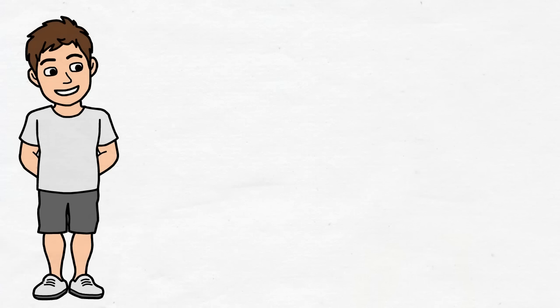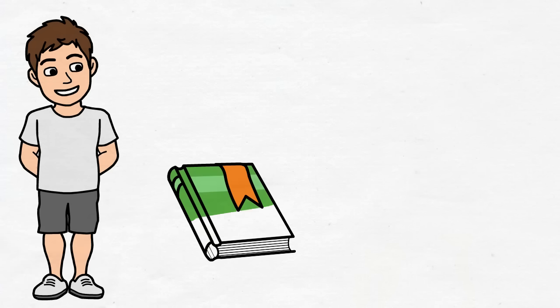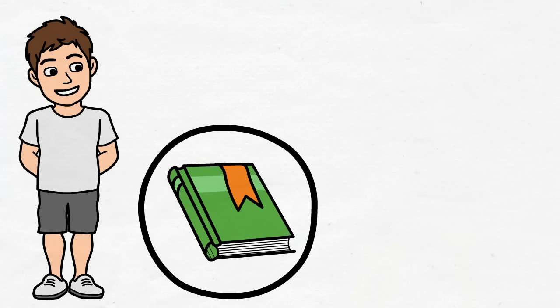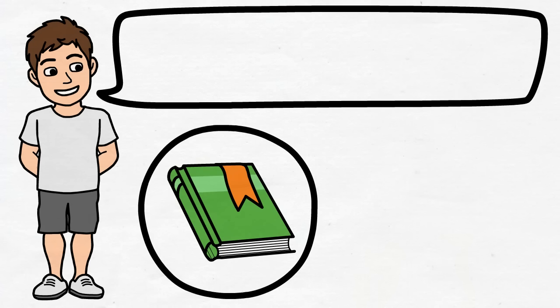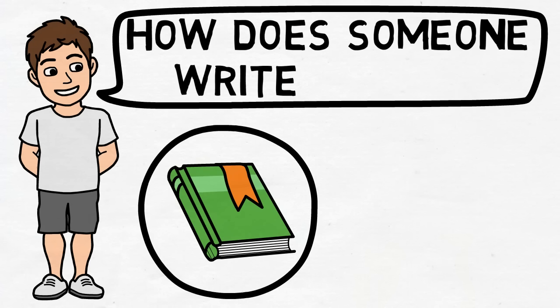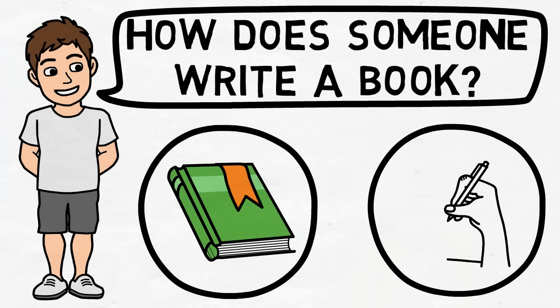This is Mike. He wants to write his own book. OK, so that's the direction he wants to go in. Now he needs to find out how to get there. So he asks himself this question. How does someone write a book? He comes up with this simple answer. They write every day.